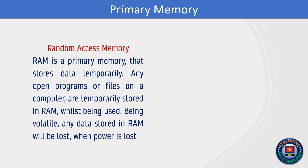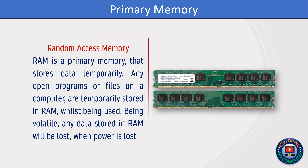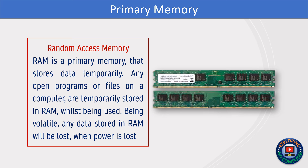Random Access Memory (RAM) is a primary memory that stores data temporarily. Any open programs or files on a computer are temporarily stored in RAM while being used. Being volatile, any data stored in RAM will be lost when power is lost.